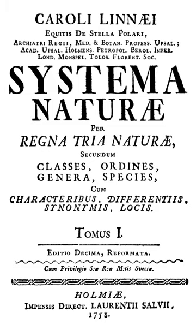Linnaeus's Systema naturae lists only about 10,000 species of organisms, of which about 6,000 are plants and 4,236 are animals. According to the historian of botany William T. Stern, even in 1753 Linnaeus believed that the number of species of plants in the whole world would hardly reach 10,000. In his whole career, he named about 7,700 species of flowering plants. Linnaeus developed his classification of the plant kingdom in an attempt to describe and understand the natural world as a reflection of the logic of God's creation.